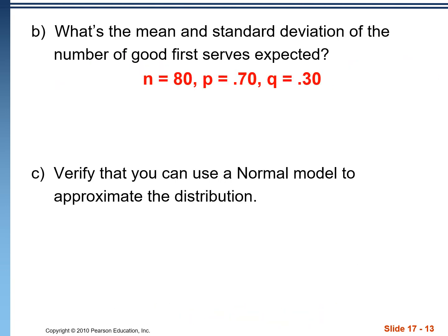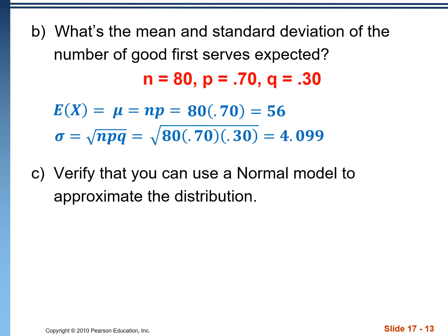Now that that's out of the way, what's the mean and standard deviation for the number of successful first serves expected? Mean is N times P. We expect her to make 56 serves. Standard deviation, radical NPQ, 4.099. We'll call that 4.1.